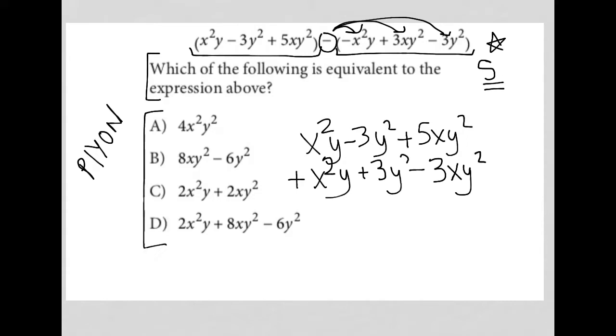So I'm just going to combine all these terms together. So the first term, x squared y plus x squared y gives me 2x squared y. My negative 3y squared plus 3y squared, well, that just eliminates itself. And then 5xy squared minus 3xy squared gives me a positive 2xy squared. So that is my solution from simplifying.